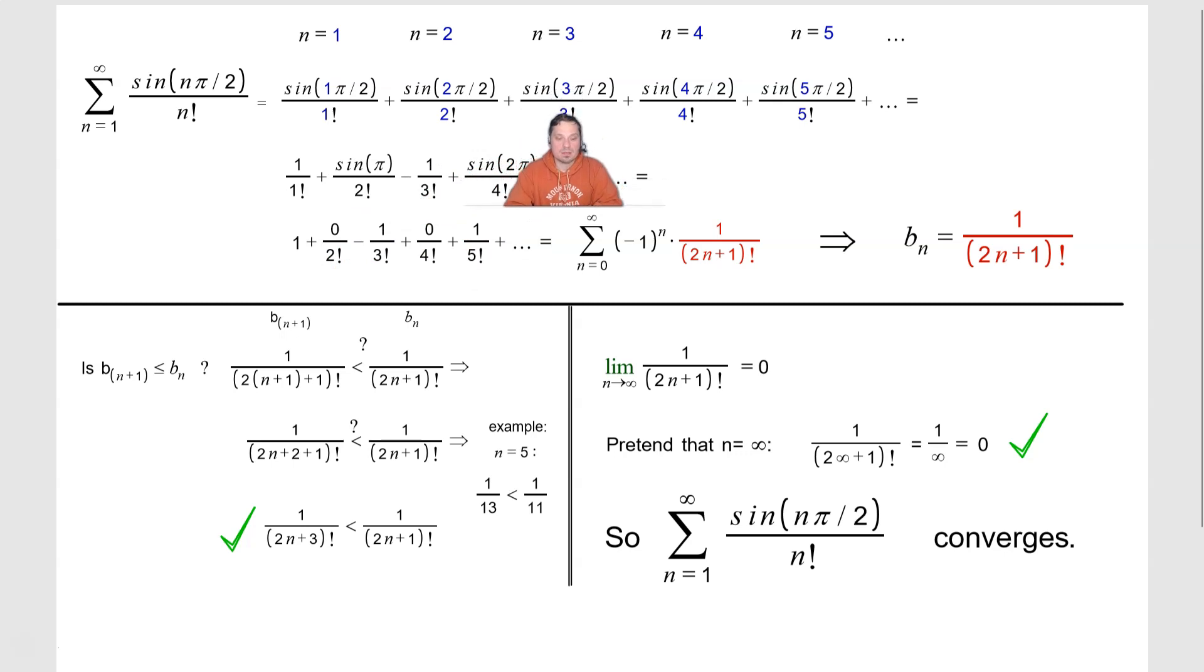Next is going to be sine of 3 pi over 2 over 3 factorial. Well, sine of 3 pi over 2, that's going to give you negative 1 over 3 factorial. Bottom of the unit circle, 270 degrees if you like. Next is going to be 4 pi over 2. So the 4 pi divided by 2 will give you 2 pi. So it becomes sine of 2 pi over 4 factorial.